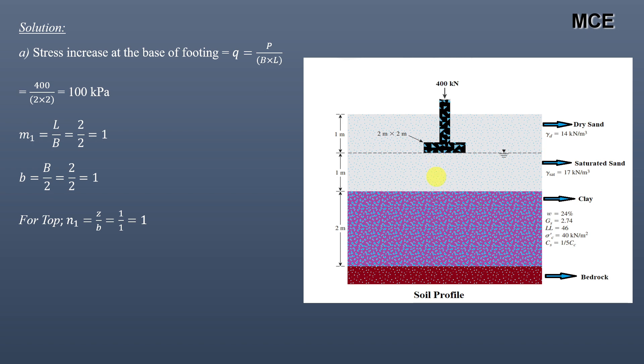For the middle of the clay layer, z equals 2 meters, so n1 = 2/1 = 2. For the bottom of the clay layer, z equals 1 + 2 = 3 meters, so n1 = 3/1 = 3.